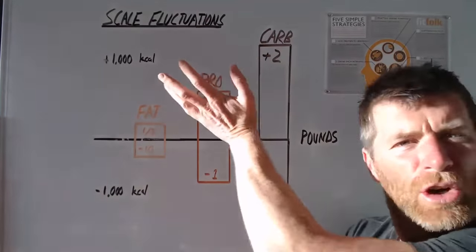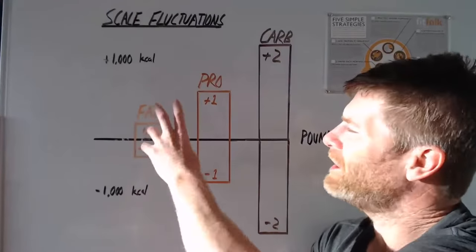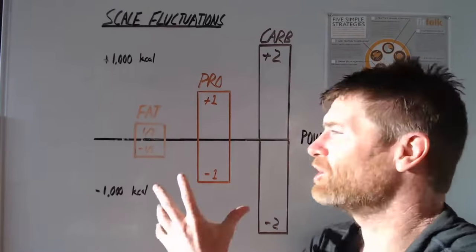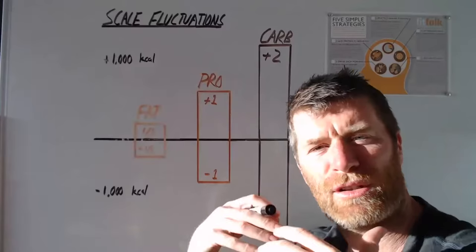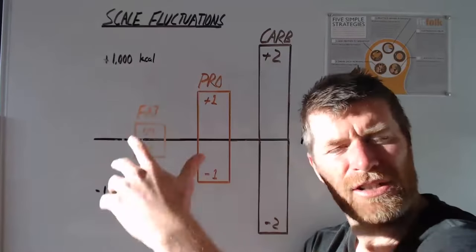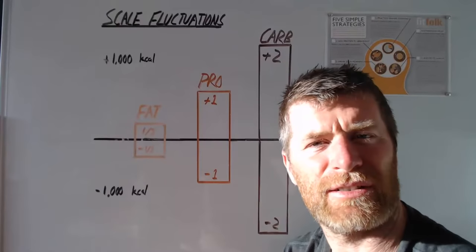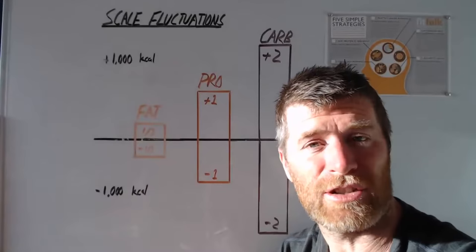and if you took a thousand calories and stored them as fat it will only add about a third of a pound to your weight because fat is extremely energy dense. If you took a thousand calories and stored them as muscle protein it would add about a pound and if you took a thousand calories and stored them as carbohydrates, glycogen it would add about two pounds to your weight.